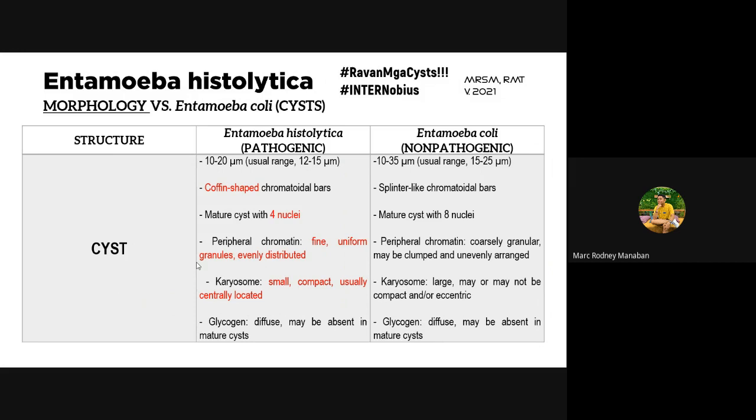Very characteristic distinction: the chromatoidal bars of E. histolytica are coffin-shaped with rounded ends. Whereas, the chromatoidal bars of Entamoeba coli are splinter-like — with pointed/irregular ends that appear spike-like. This is a very important distinguishing morphological feature between the two species.